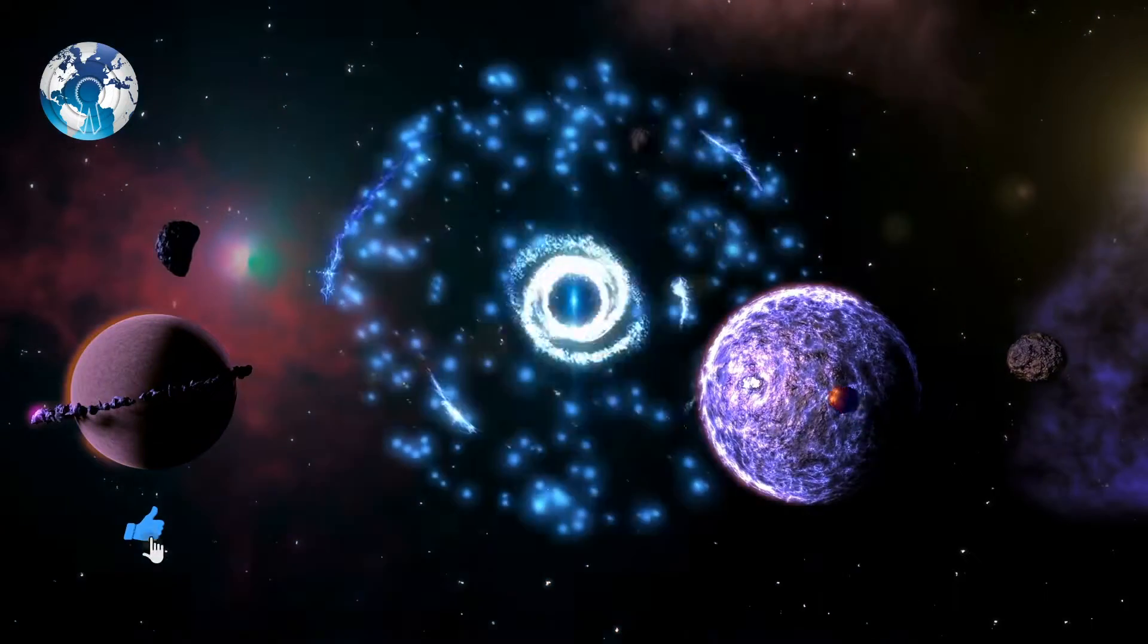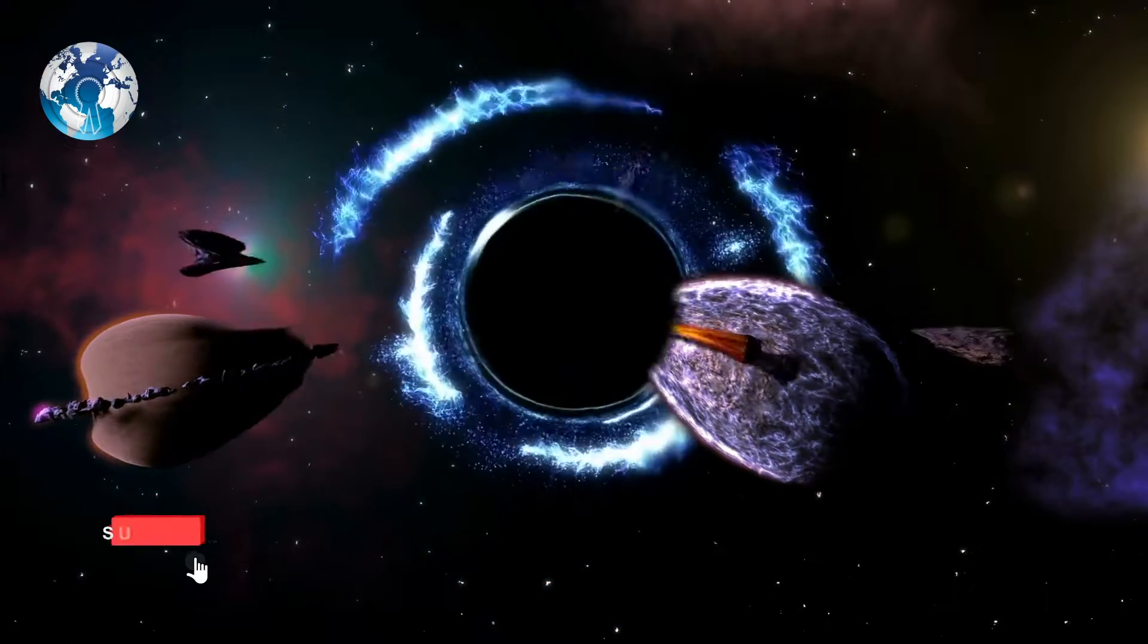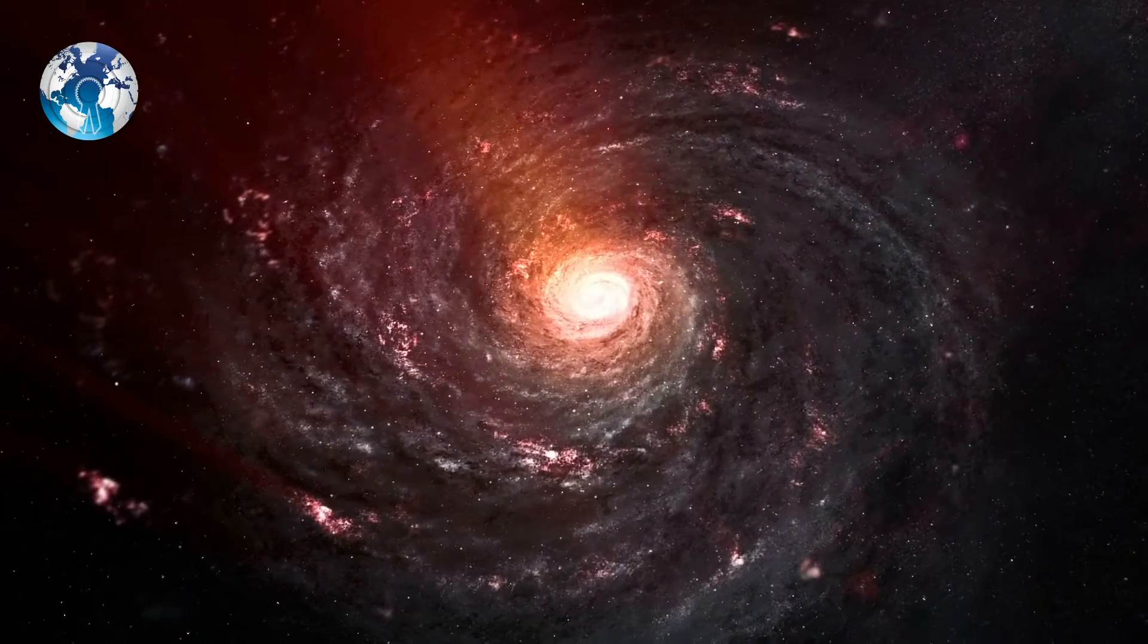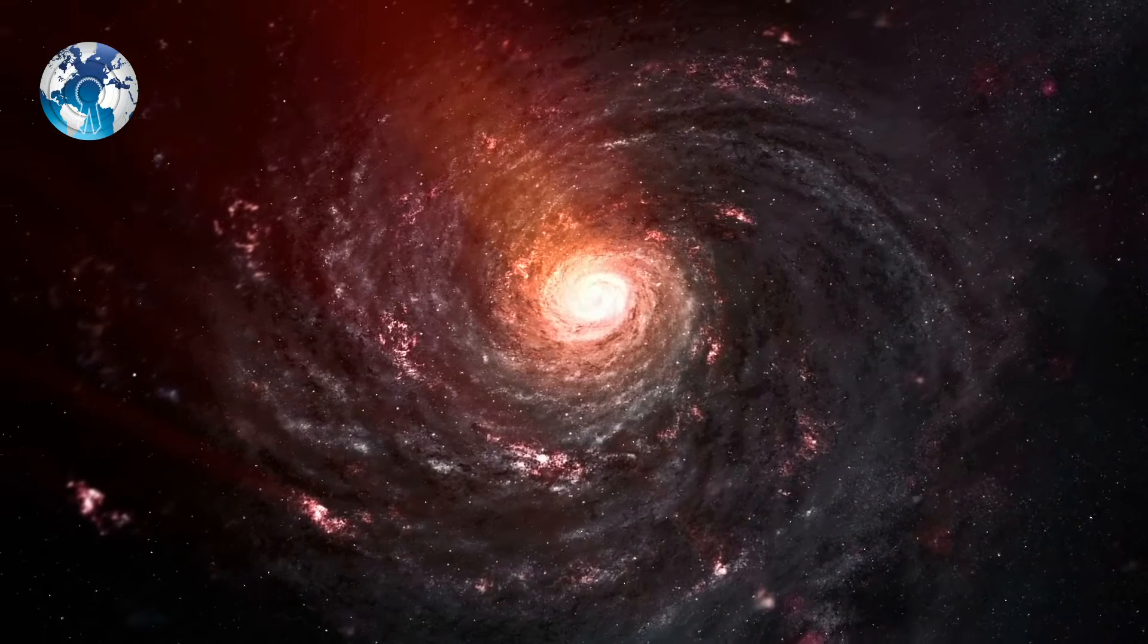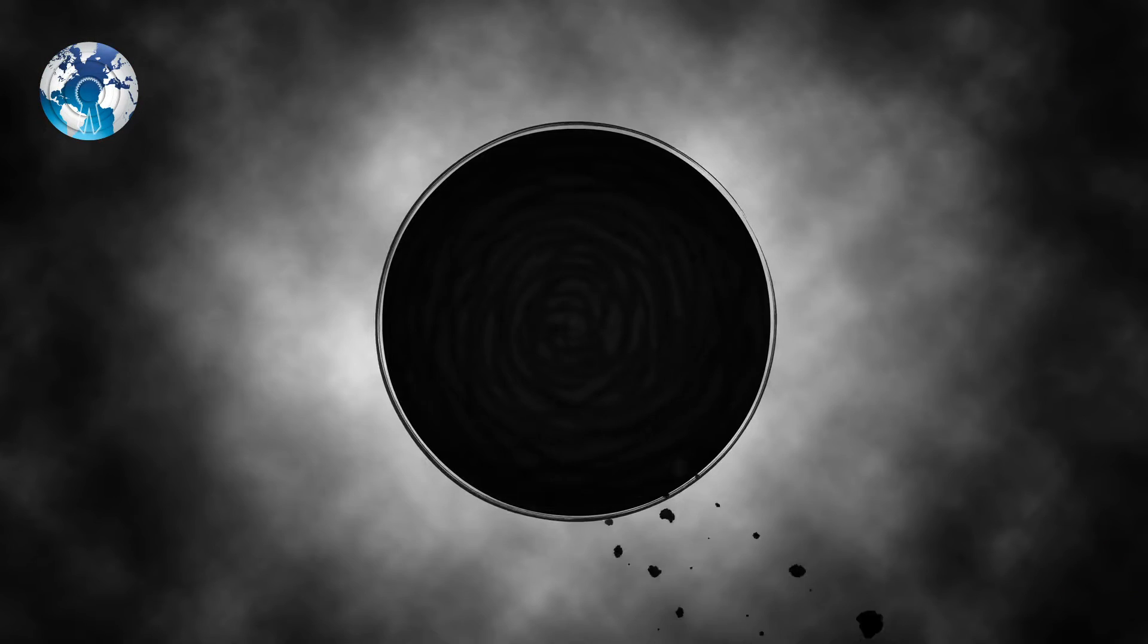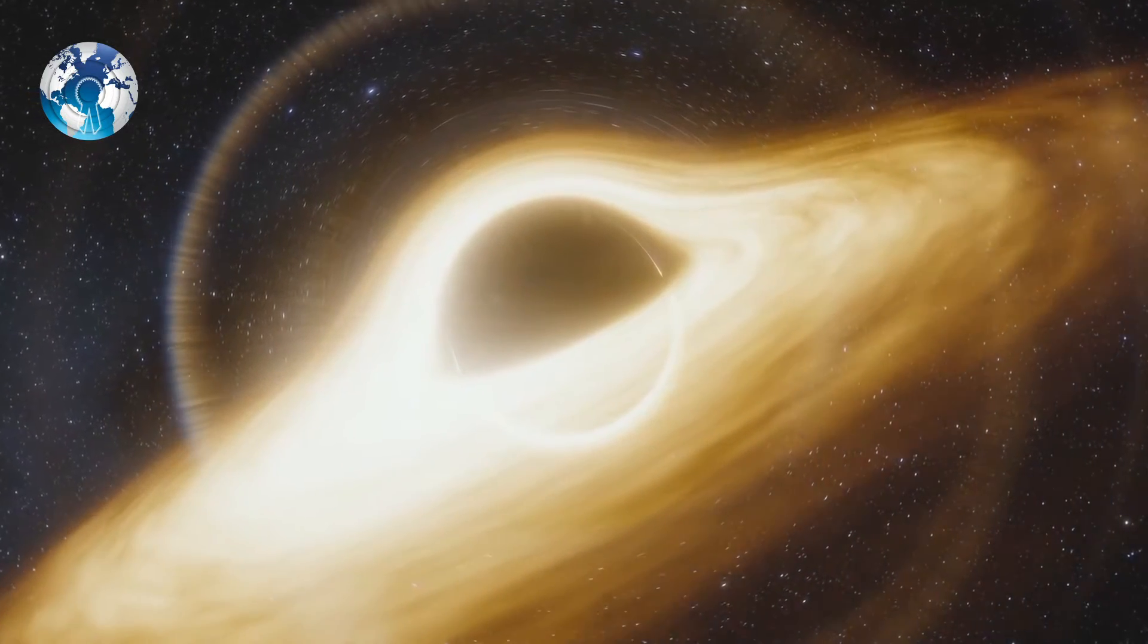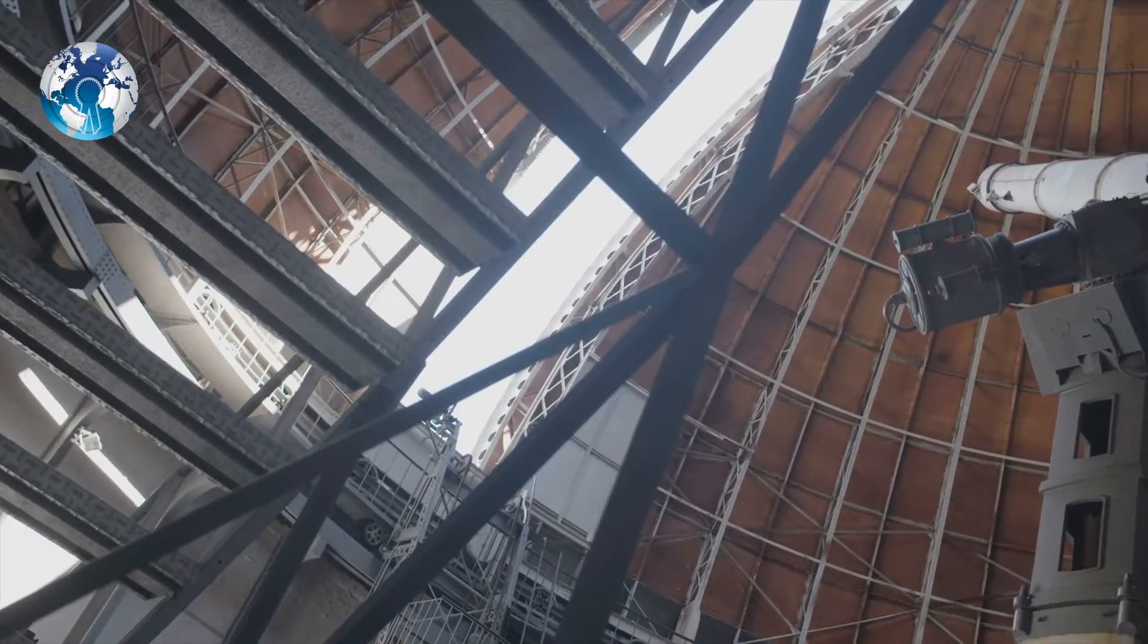The team spotted an X-ray flare in I Zwicky 1 that was so bright that some of the light reflected on the gas falling back into the black hole. When that reflected light was bent around the back of the black hole by the object's extreme gravity, the team was able to spot it using the ESA and NASA space telescopes.